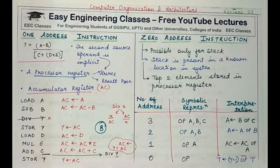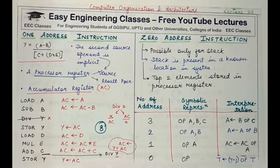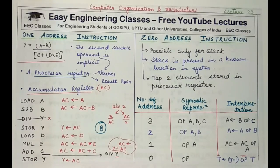The major points about three address, two address, one address, and zero address instructions remain the same, though implementation is architecture-dependent. That's all for today's class. If you liked this video, subscribe to our channel, press the bell icon for notifications, share it with your friends, let us know in the comments how you found this video, and give it a thumbs up. Thank you.